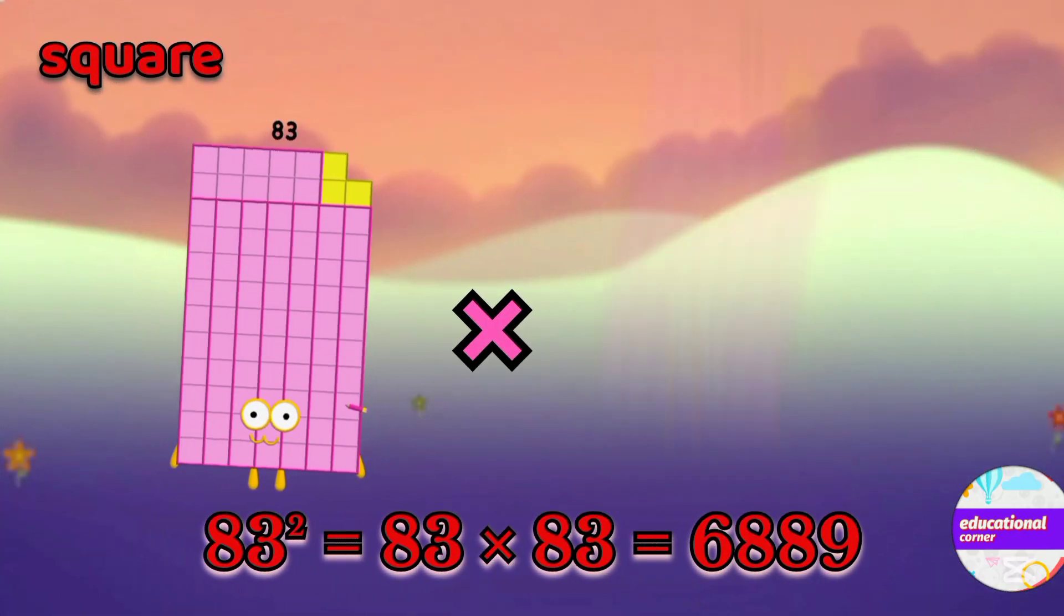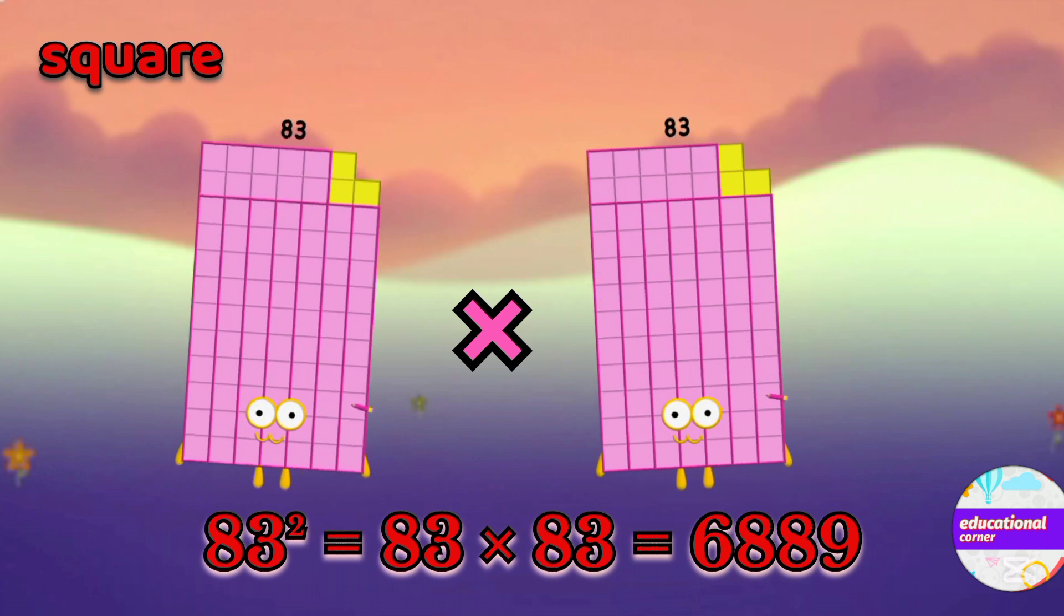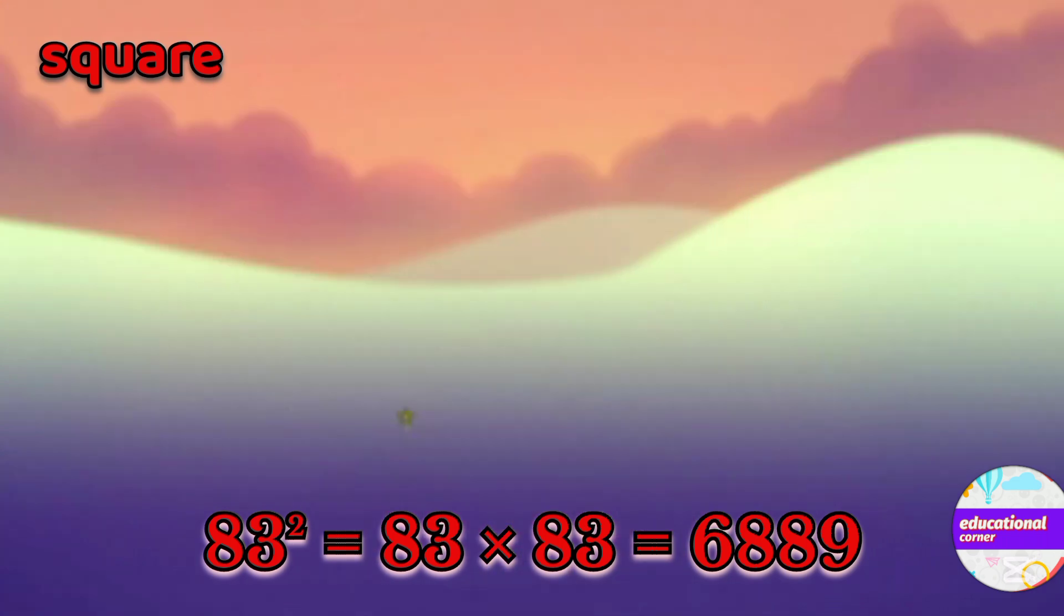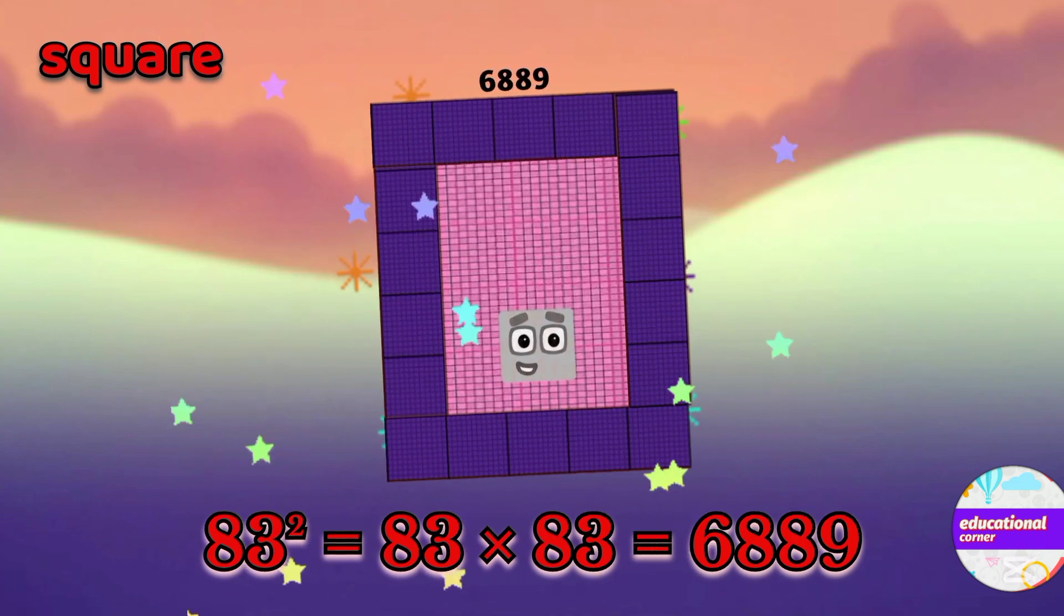83 multiply by 83. So the square of 83 is 6889.